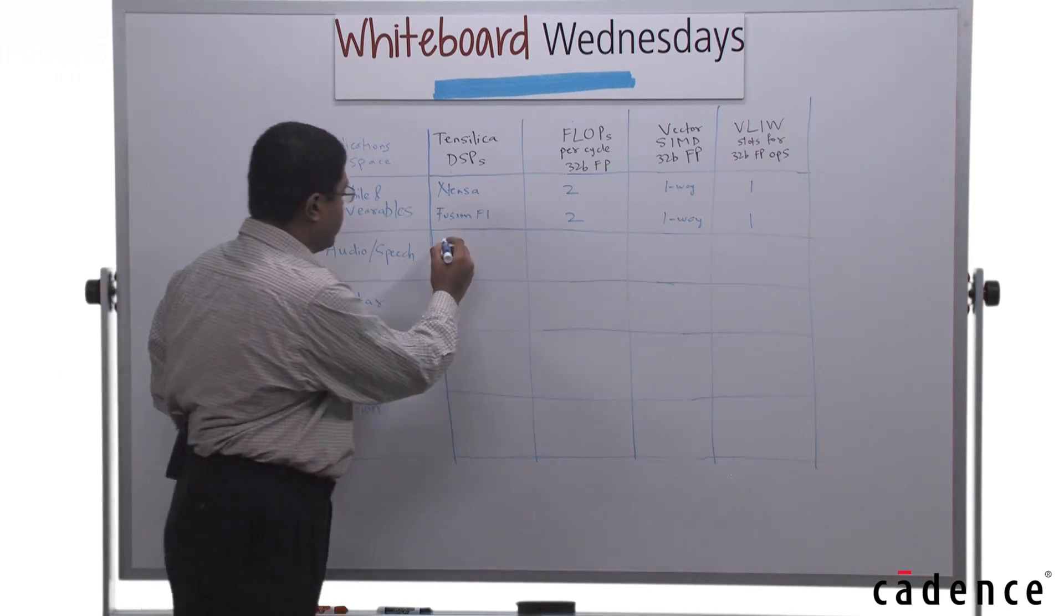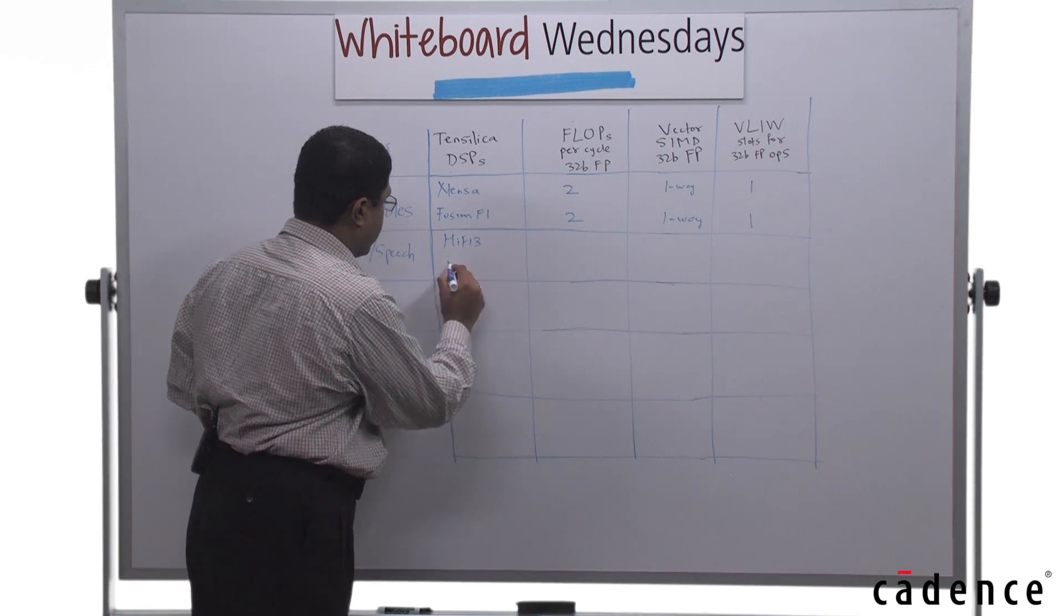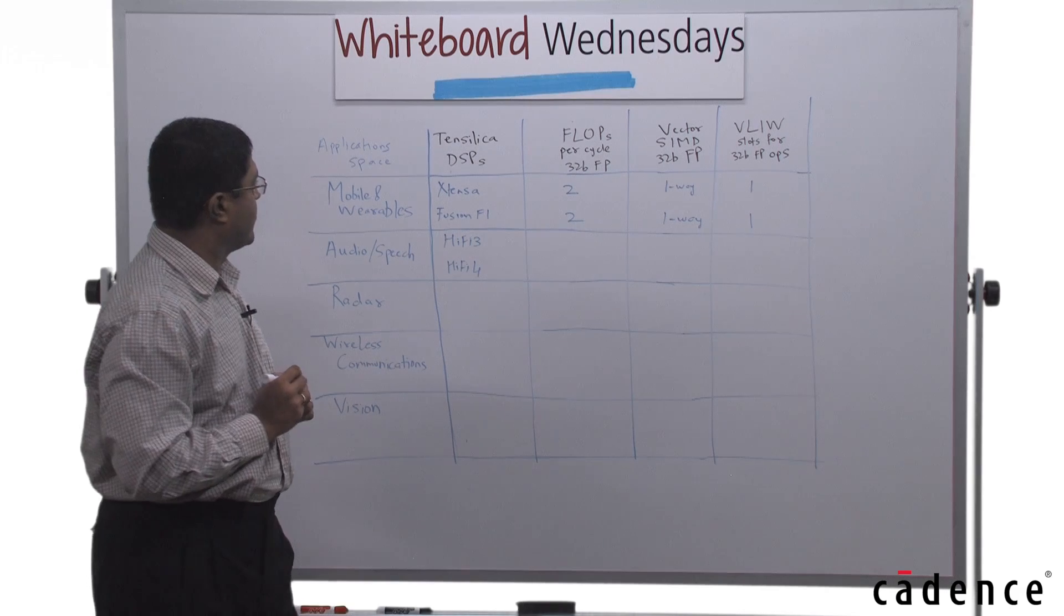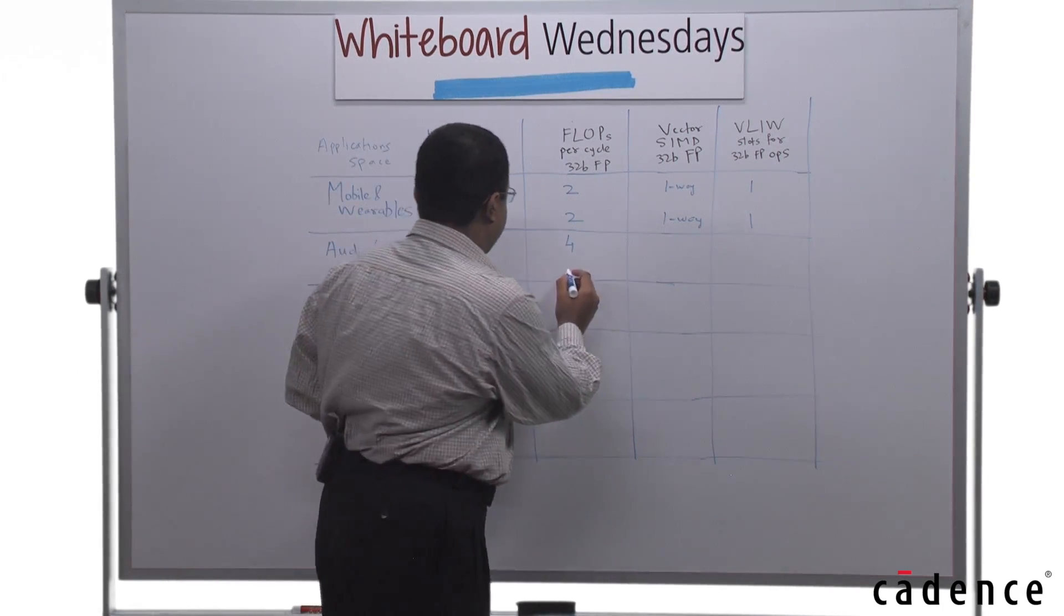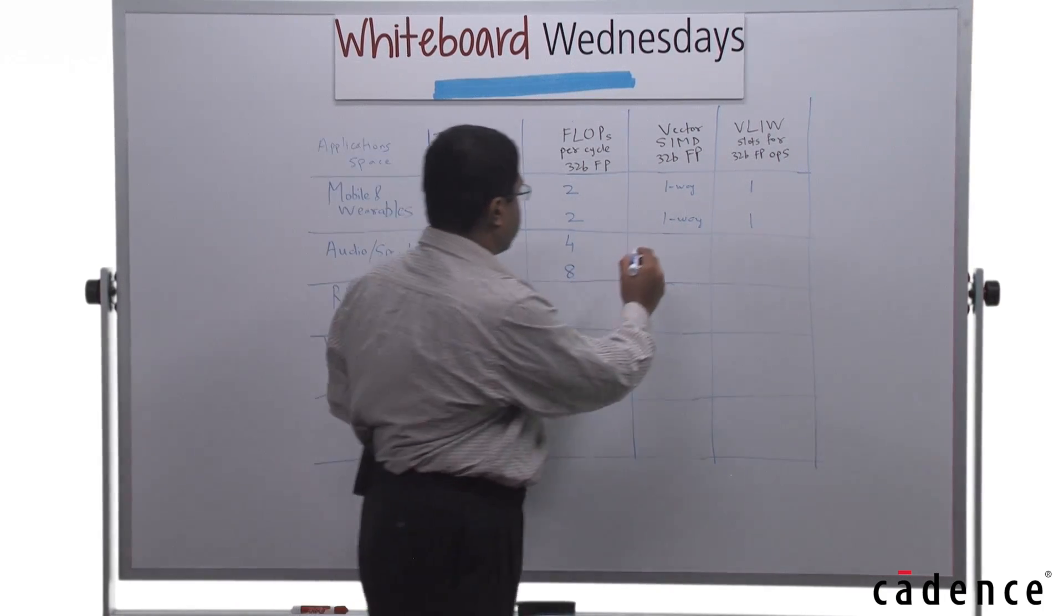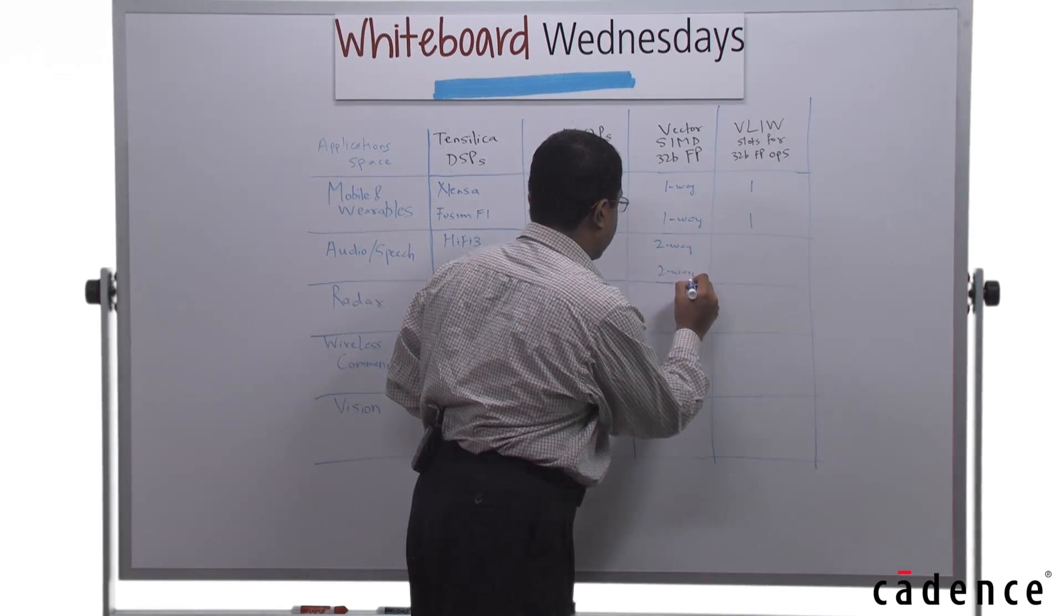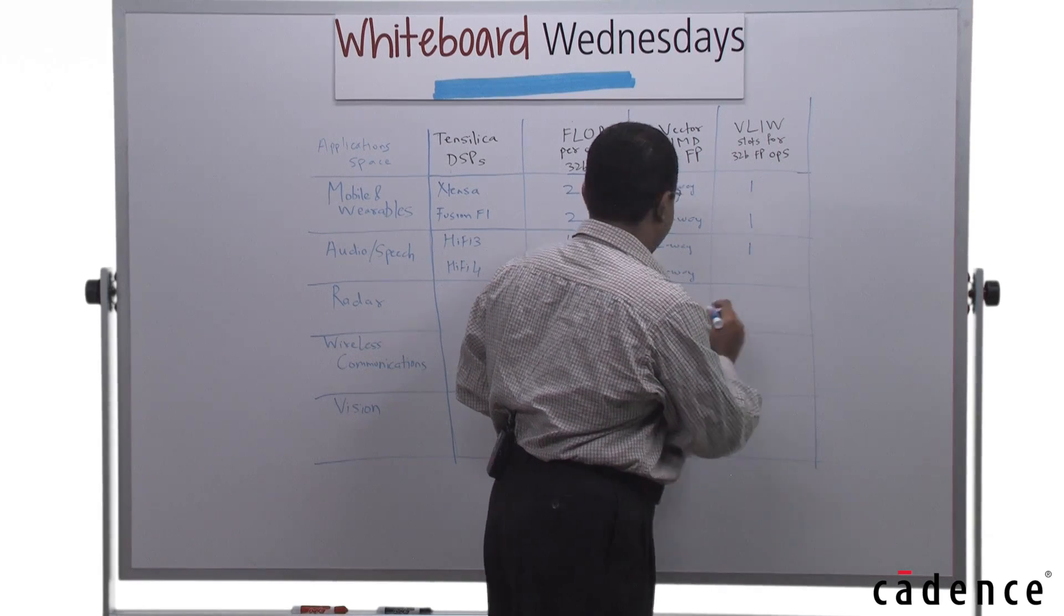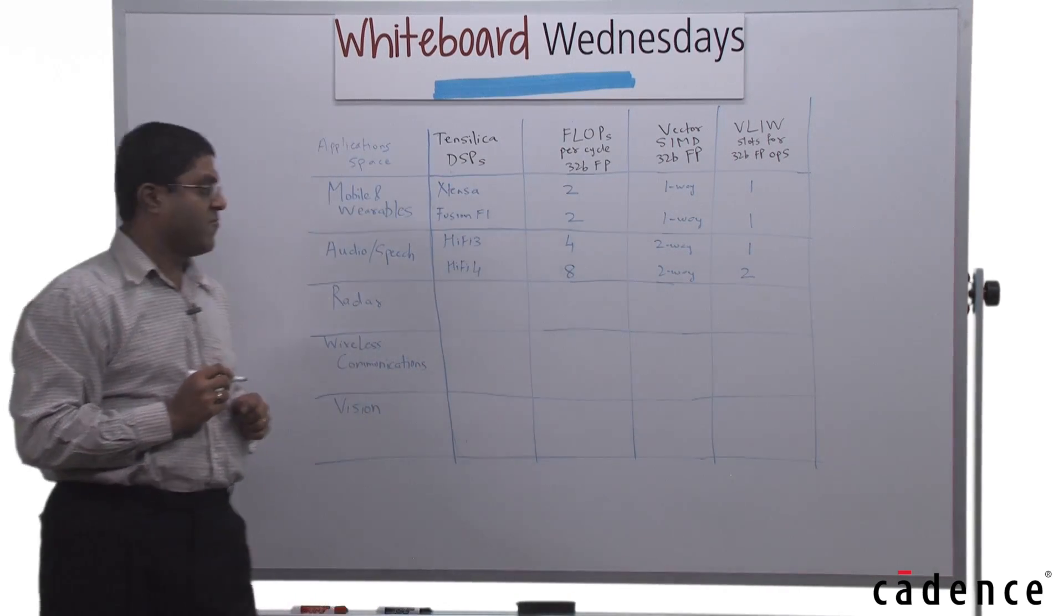For audio and speech in the HiFi family, there is the HiFi 3 and the HiFi 4, both of which have floating point support. HiFi 3 is 4 FLOPS per cycle, HiFi 4 is 8 FLOPS per cycle. Both of them have SIMDs of 2-way and one slot for the HiFi 3 and two slots for the floating point operations for the HiFi 4.